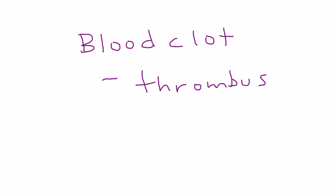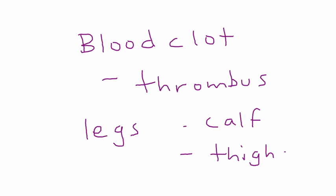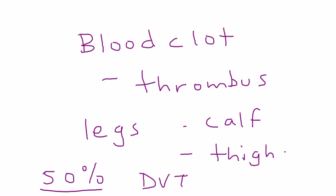A DVT is a blood clot that most commonly occurs in the legs, either presenting in the calf or thigh. The reason it's so important and should be taken very seriously is that as much as 50% of the time a DVT can progress to a pulmonary embolism, which I'll discuss more shortly.